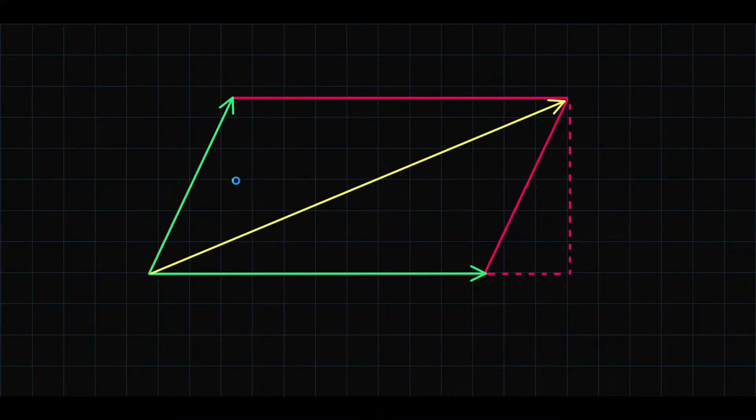Alright, in this video, we shall derive the expression for the magnitude of the resultant of two concurrent vectors using the parallelogram law of vectors addition. So let's get down to business.